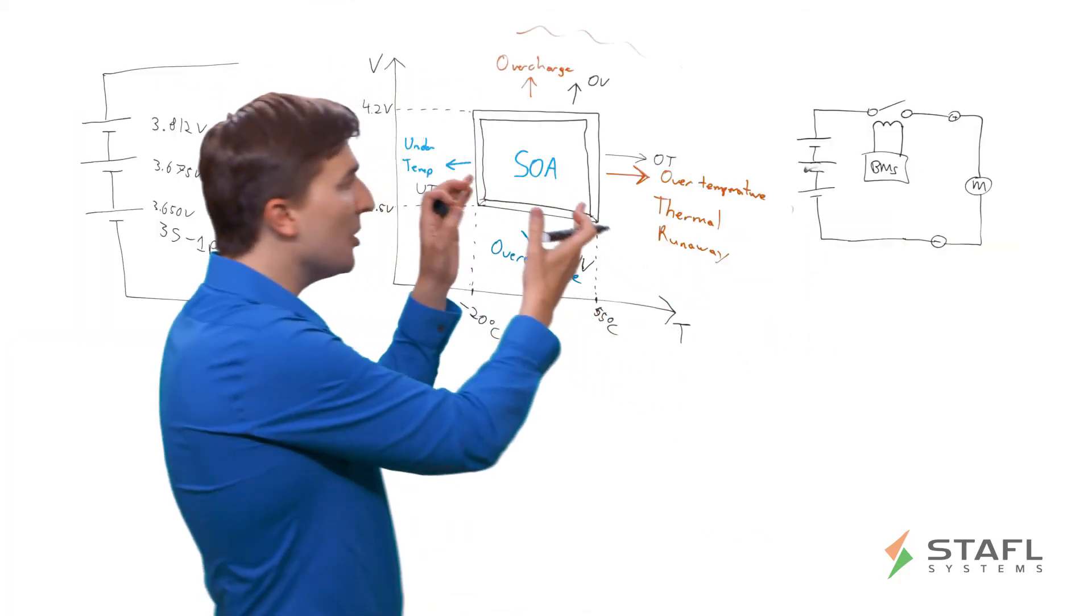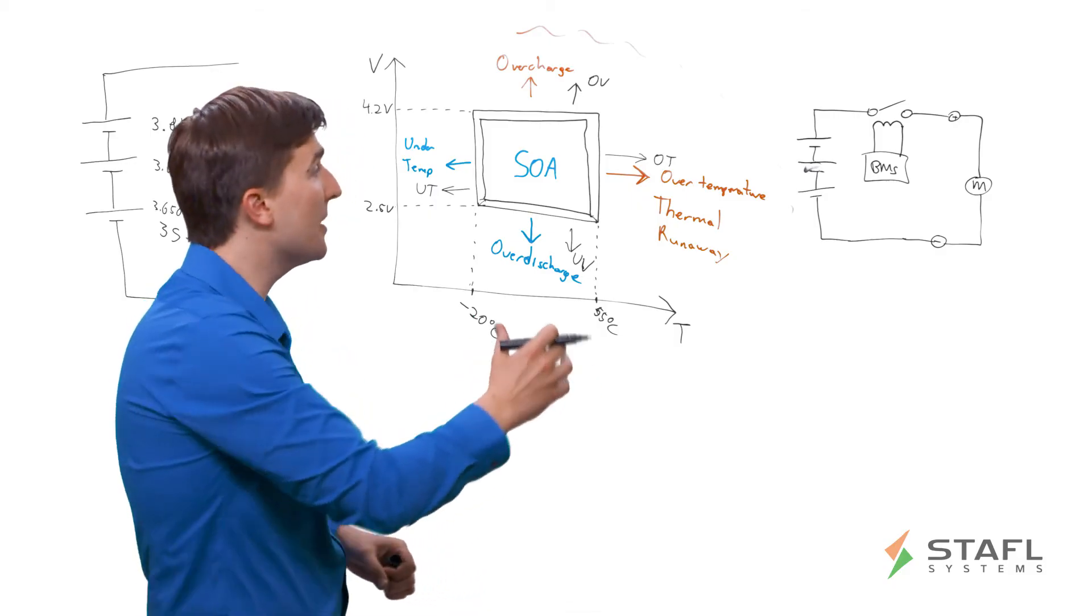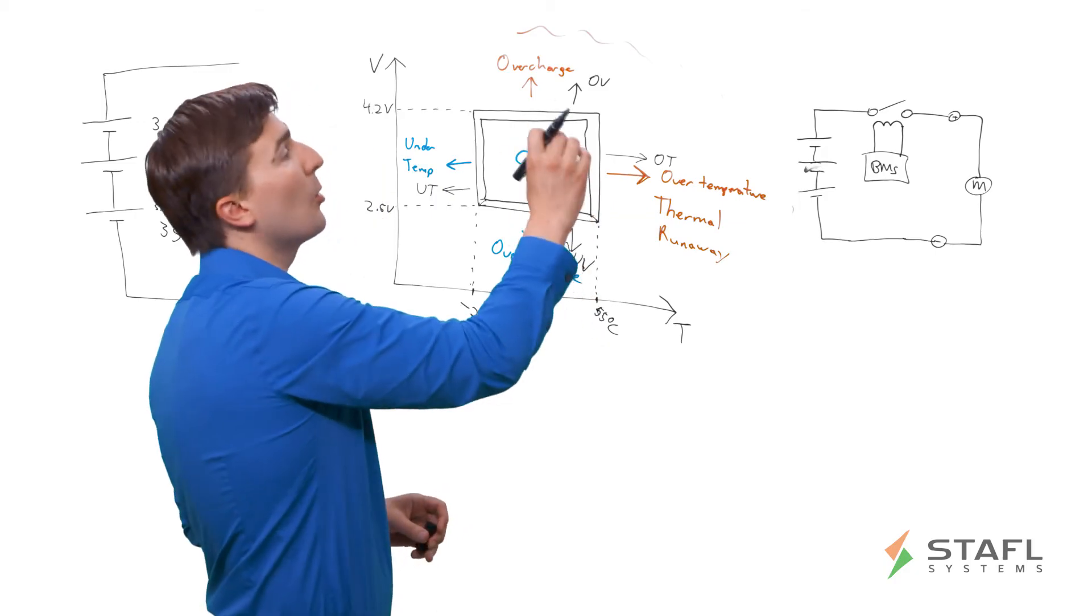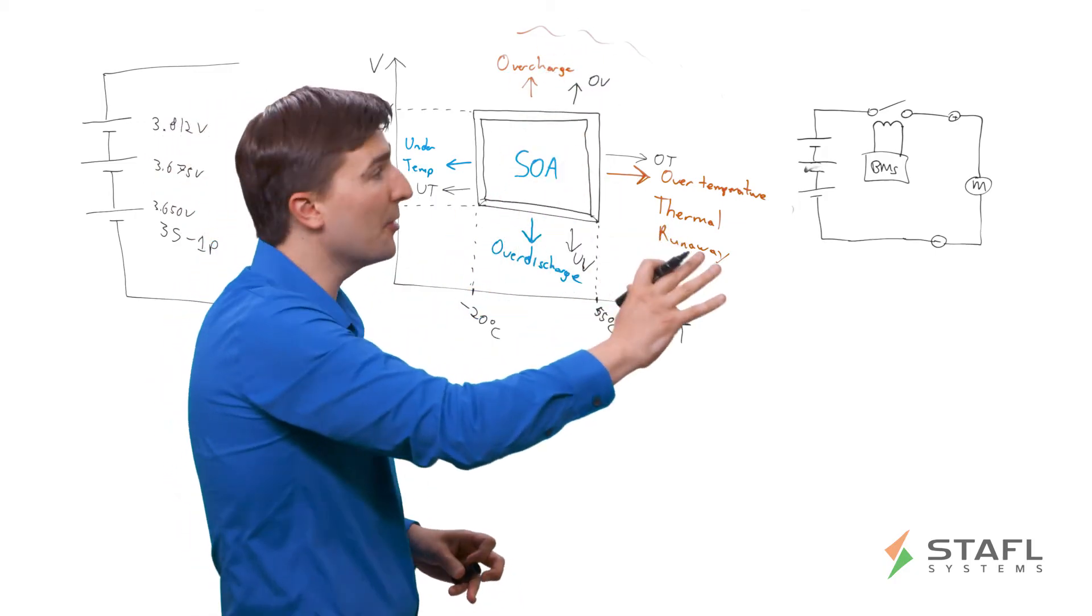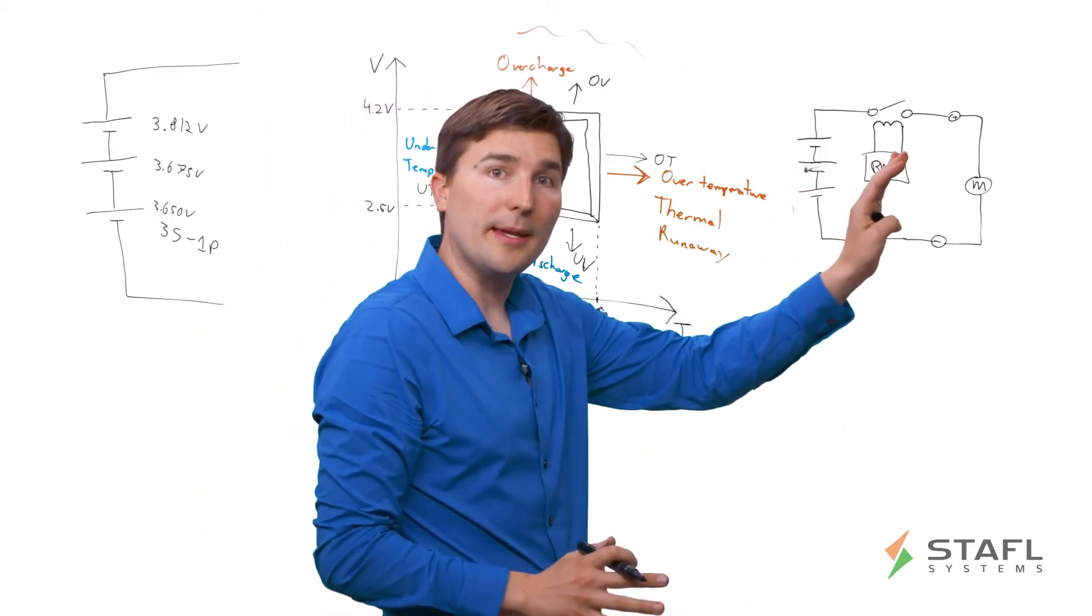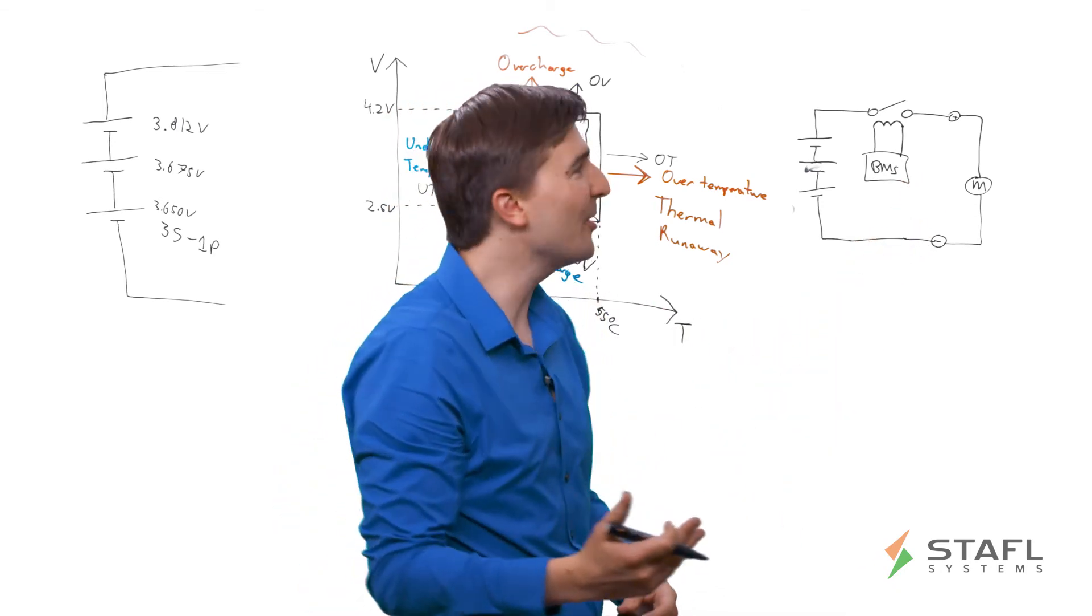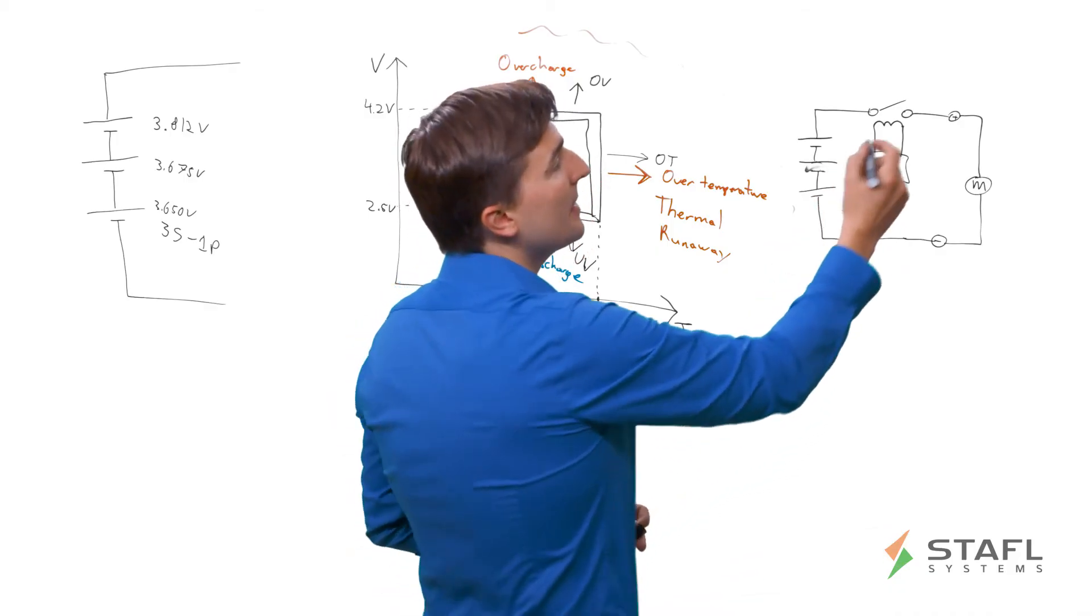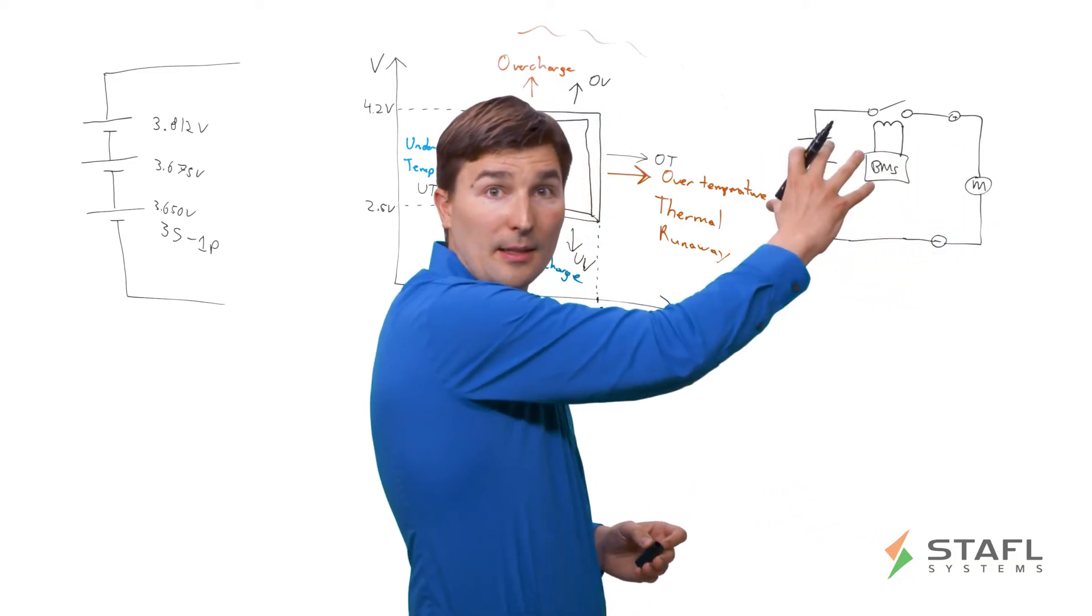So, for example, typically you will have a BMS that will communicate via its communication interface to the external system saying, one of the cells is getting too hot, or one or more of the cells is getting too overcharged. Do not charge me any further. It is the responsibility of the system controller to obey the BMS limit. Now, if it does not do that, and for example, it's malfunctioning, it's broken, the software is written incorrectly, then you have a situation where the BMS independently needs to be able to disconnect itself from the load or from the charger and protect the pack.